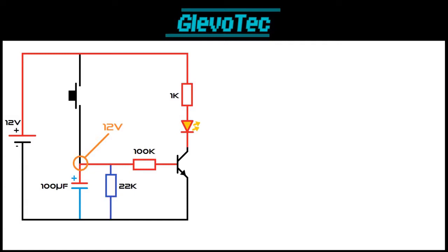But the parallel resistor will start discharging the capacitor. This causes the voltage to drop. Until at some point it reaches 0.7 volts. The transistor will open and the LED will turn off.